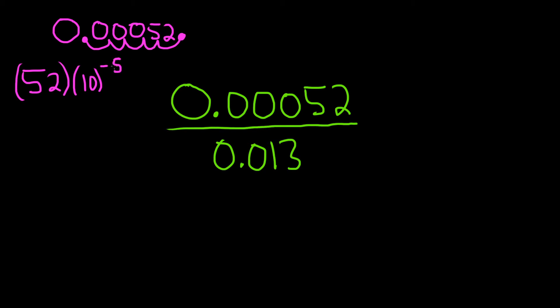Let's think about that. So negative 5 would mean that we put a decimal here and we go 5 to the left. That would give us what we started with. So this would work and give us this. If you think about it backwards, you would get this. So this is 52 times 10 to the negative 5.